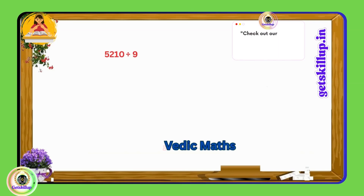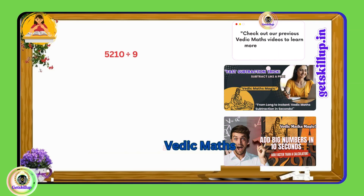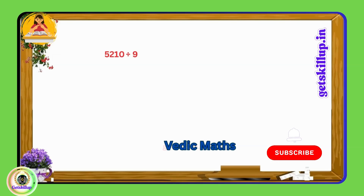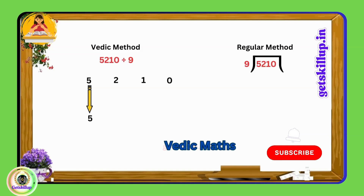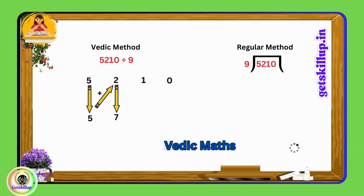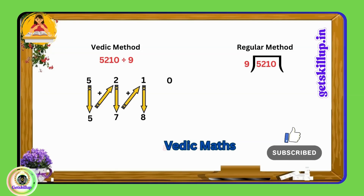Let's take an example: 5210. You can choose any number for practice. Now we will divide it by nine. Here's the method: write down the number. The first digit, five, remains unchanged. Add the first and second digits — five plus two equals seven. Write down this result, then add this result to the next digit: seven plus one is eight.